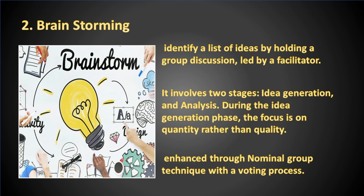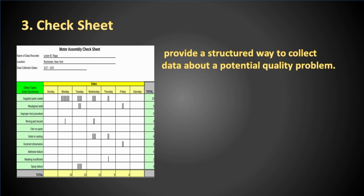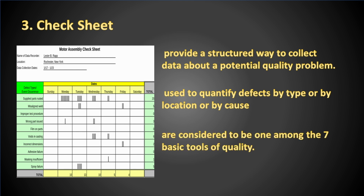Brainstorming can be enhanced through the nominal group technique with a voting process. Check sheets provide a structured way to collect data about a potential quality problem. Check sheets may be used to quantify defects by type, by location, or by cause. Check sheets are considered one among the seven basic tools of quality. Though the PMBOK Guide uses this tool only in the quality management knowledge area, it is a generic tool that can be adapted for a wide variety of purposes.